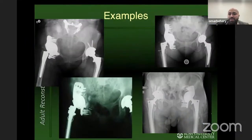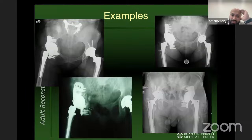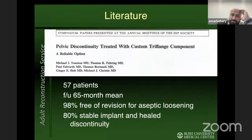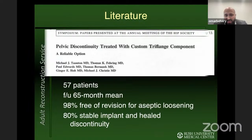These are examples of what these constructs look like with the types of defects around them. Planning the hip center is critical — keep it not excessively lateralized, and target the iliac and ischial flanges appropriately for robust screw fixation. This has been published on multiple times. One study of 57 patients with 65-month mean follow-up showed 98% free of aseptic loosening, and 80% of these implants had a stable, healed discontinuity — pretty good short-to-mid-term outcomes.